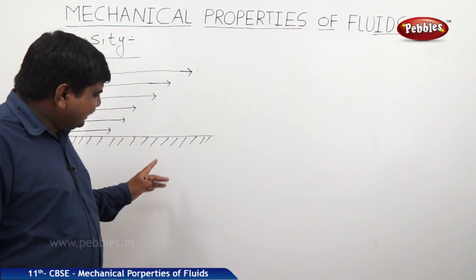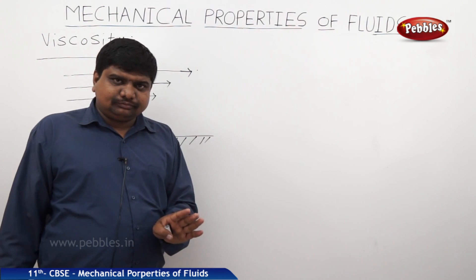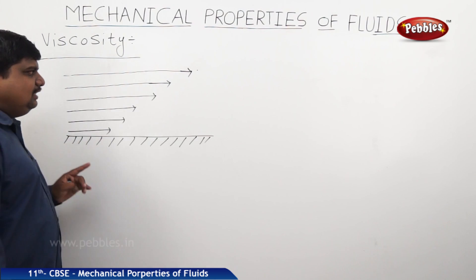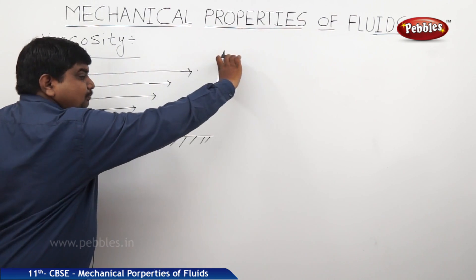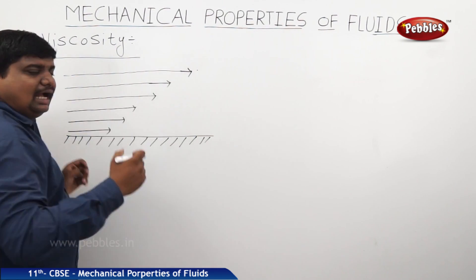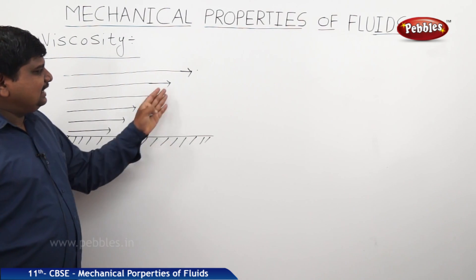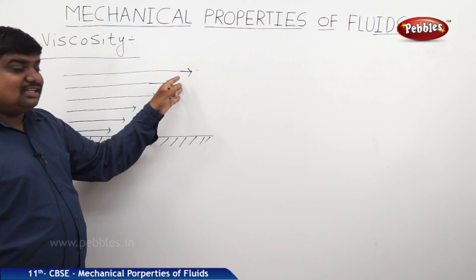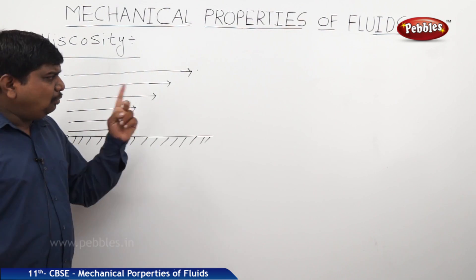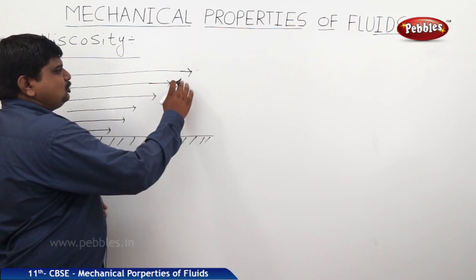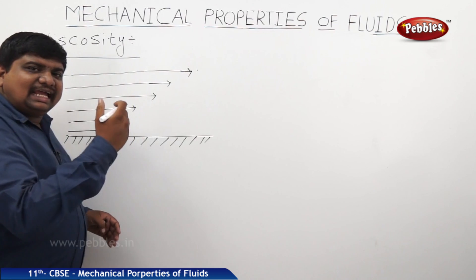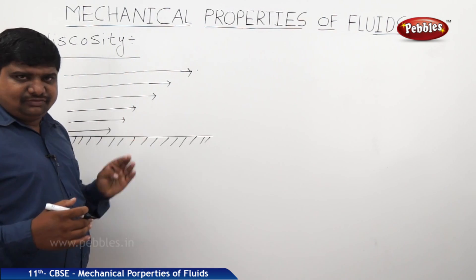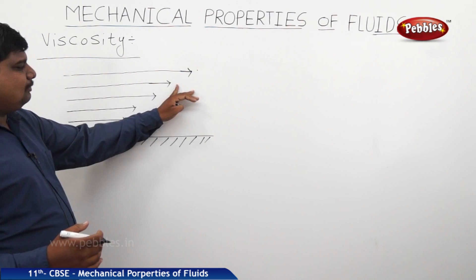In this case, we are neglecting frictional force. Still, one layer proceeds further, but the very next adjacent layer does not proceed that far — it simply slides behind. The reason is that an internal tangential force acts between the layers of the fluid, keeping the next layer backwards.